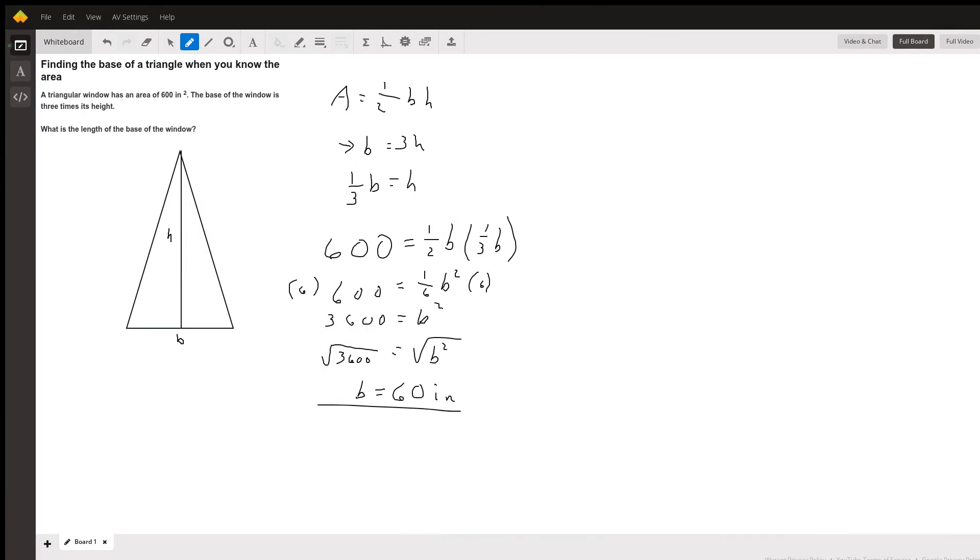Okay, so we've got our triangle. We've got the formula for the area of a triangle: one-half base times the height. They tell us that the base is three times the height, so B equals 3H.